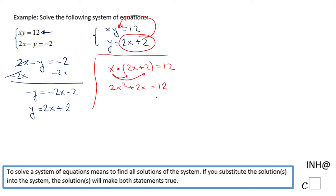So we have to have 0 on one side. Therefore, I'm going to subtract 12 to make it 0 on the right side. So we have 2x squared plus 2x minus 12 equals 0.